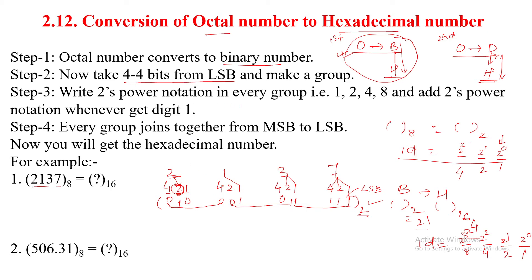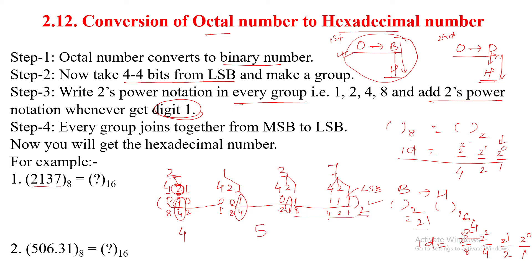For the first group, only the 4-place is used, so the value is 4. In the next group, the 4-place and 1-place are used, so 4 plus 1 equals 5. In the third group, all four places are 1, so 8 plus 4 plus 2 plus 1 equals 15.